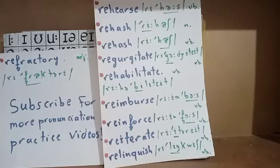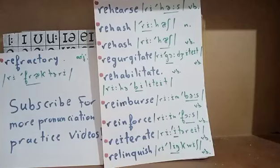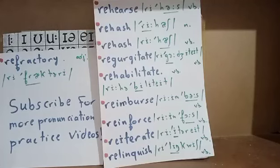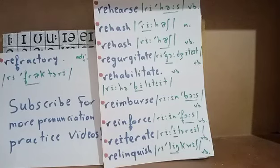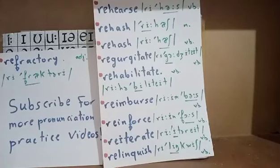The next word is regurgitate — four syllables, a verb with stress on the second syllable 'go'. Say: regurgitate. It means to spout out food that was swallowed, to eat it again. It also means to repeat information without understanding. That's regurgitate — stress on the second syllable 'go'.